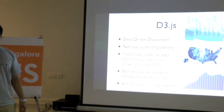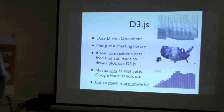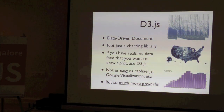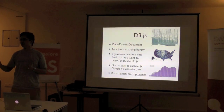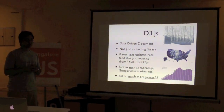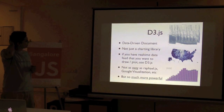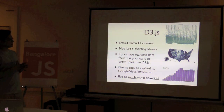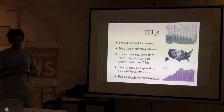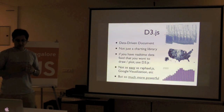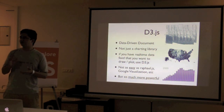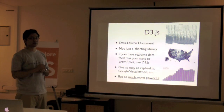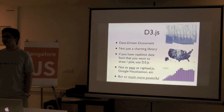D3 is basically Data-Driven Documents for short. It's a really powerful library that can take data — mostly in JSON format — and you can do a whole lot of things with it. It's written by a guy called Mike — an amazing library with amazing examples. The amazing part is it's not just a charting library. If you work with Google Visualization, Raphael, or any other visualization libraries, they all sort of push some structure onto you — they define how a chart looks and require your data to match that format.